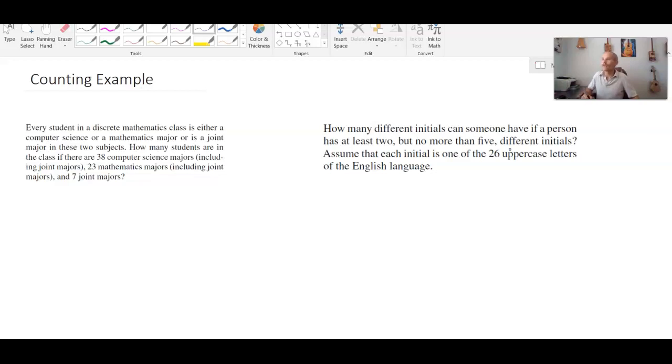Let's define first, we'll use the capital C to denote the students who are in the computer science class. So if I look at just how many students are taking or who are computer science majors, the number of elements in that set is going to be 38.